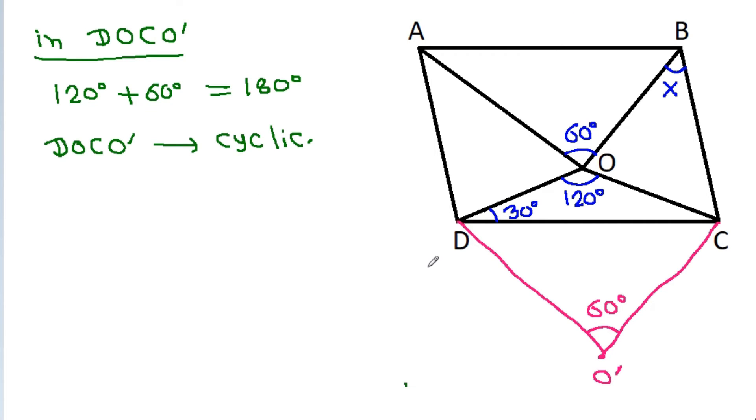And if we join OO', then in any circle, if AB is any chord, then this angle is equal to this angle, both angles are equal.